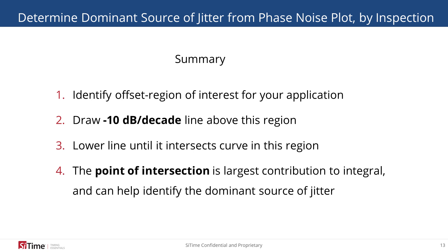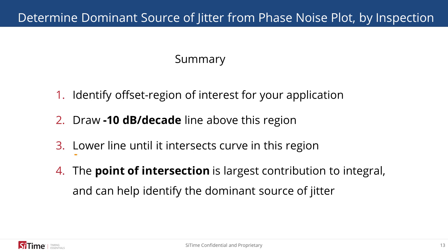In conclusion, you can determine the dominant source of phase jitter from a phase noise plot by inspection by: isolating the region of interest in the phase noise curve, drawing a minus 10 dB per decade projected line above the curve, lowering it until it intersects the curve, and then identifying the point of intersection, which will help identify the dominant source of jitter.